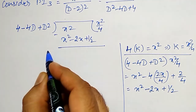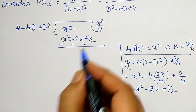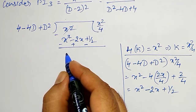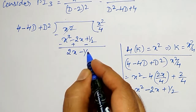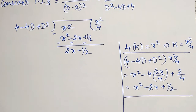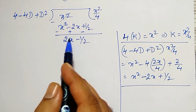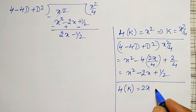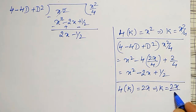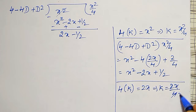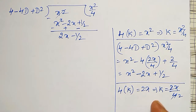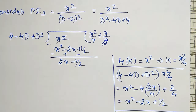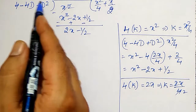While subtracting: x squared minus (x squared minus 2x plus 1/2). The x squared cancels, leaving plus 2x minus 1/2. Now, what do I multiply by 4 to get 2x? That is 2x/4 = x/2. Multiplying (4 minus 4D plus D squared) by x/2 gives: 4·(x/2) minus 4·(1/2) plus 0 = 2x minus 2.